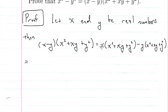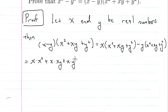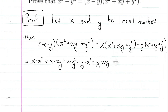We'll use distribution again. So we have x times x squared, plus x times xy, plus x times y squared. This is the first side of the expression. Now we'll do the second side: minus y times x squared, minus y times xy, and then minus y times y squared.